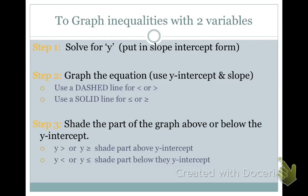To graph an inequality with two variables, you're going to do three things. The very first thing is to make sure your equation is in slope-intercept form — your inequality should look like Y equals MX plus B, except instead of an equal sign, there's going to be an inequality sign. If it is not in slope-intercept form, you have to solve for Y.